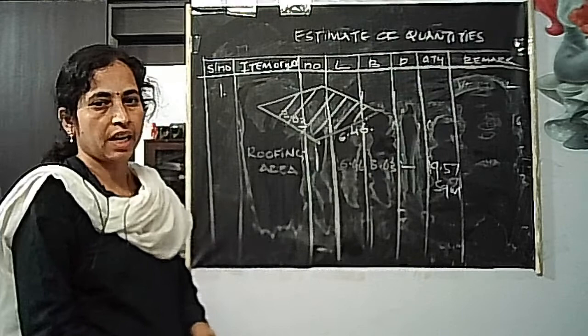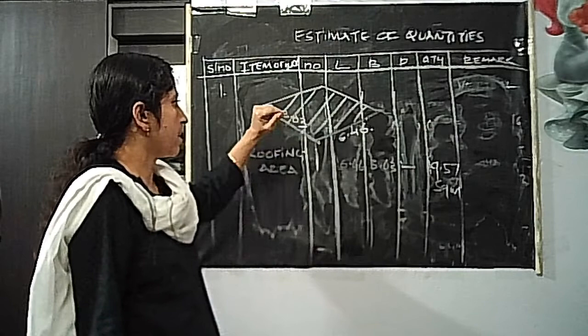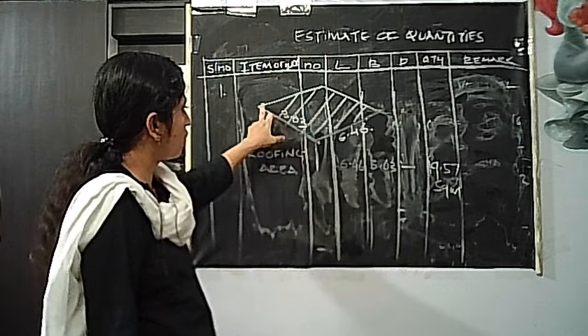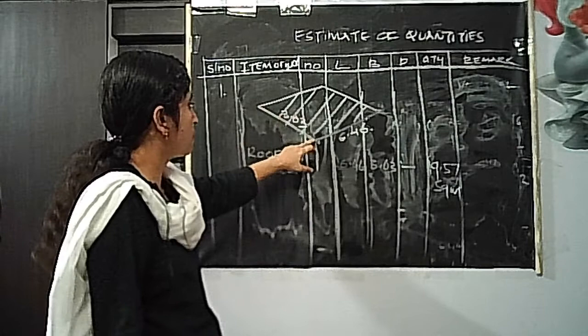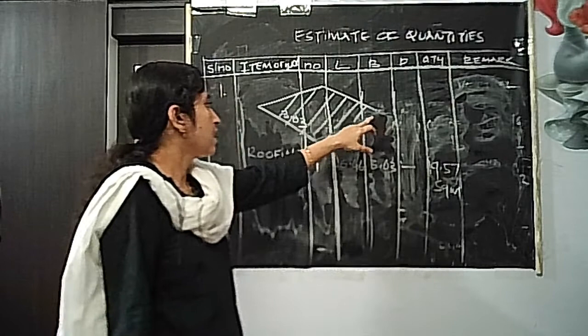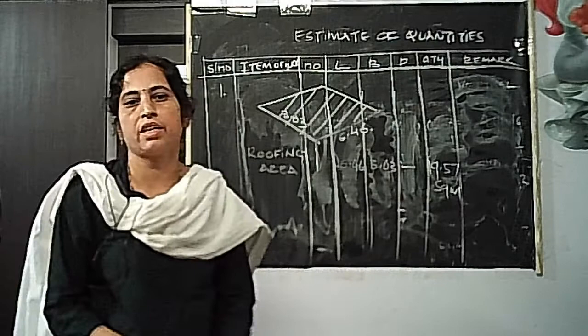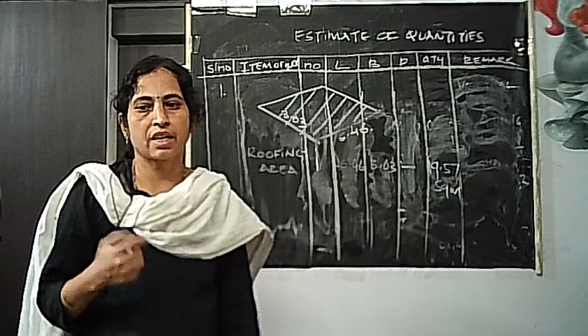The roofing area indicates how much area you are covering with Mangalore tiles. We need the inclined length to calculate the roofing area — inclined length of rafter is 3.03 meters and total length is 6.46 meters, giving 19.57 square meters. This is the way you calculate the quantity of woodwork in the roof. We will continue further with the problem in the next video.